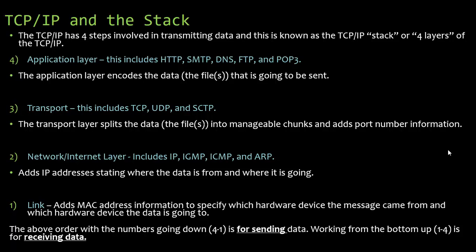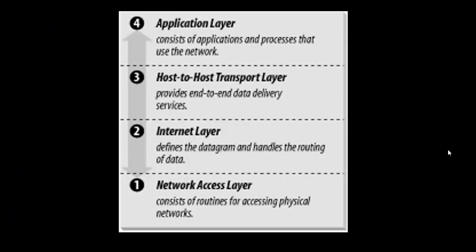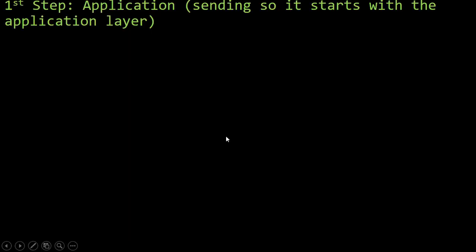The application layer handles applications and processes that use the network. Layer three is the transport layer, which provides end-to-end data delivery services, followed by the internet layer and then the network layer.